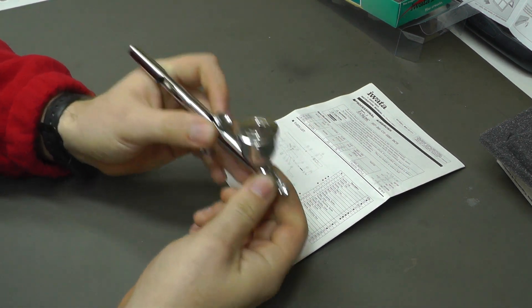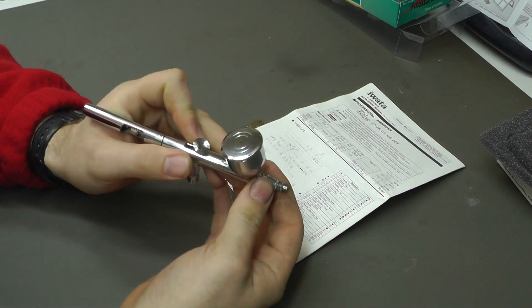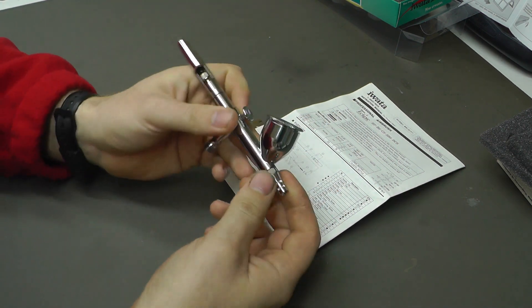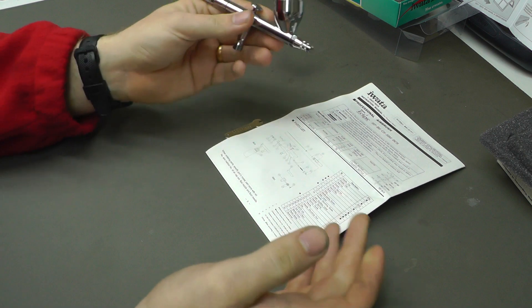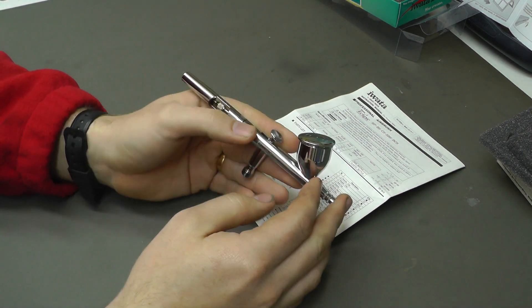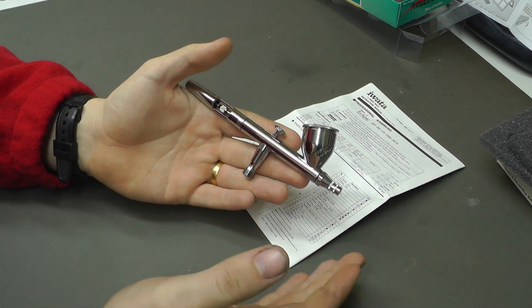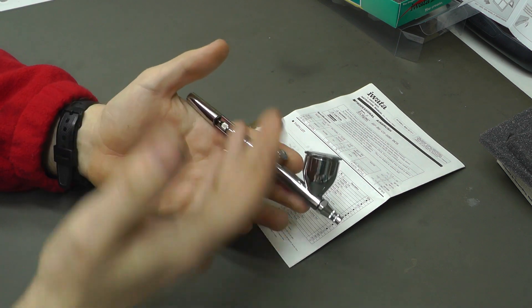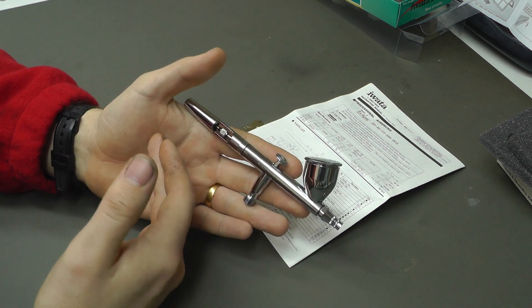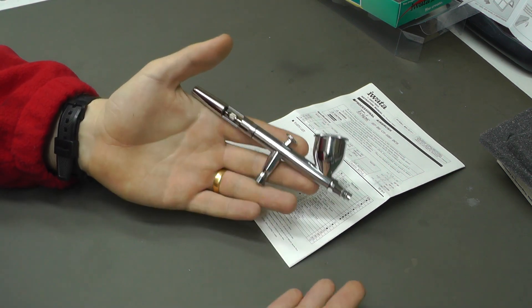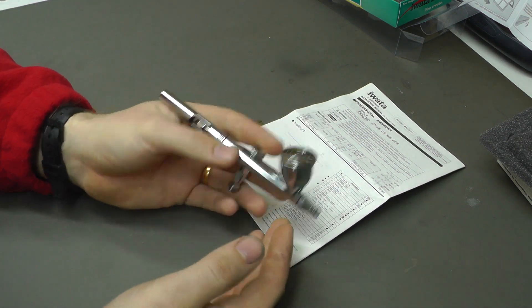So those are the different airbrushes you can get in this Eclipse range. And I think the Eclipse range is the nice standard, good quality airbrushes from Awati. So it's a good one to show you. So let's start off by actually taking this apart and let's just see, you know, all the bits inside, how it goes together, how it takes apart. And we'll have a closer look, then we'll do some spraying.